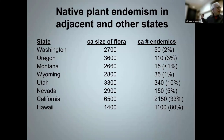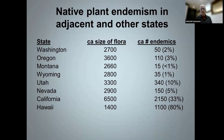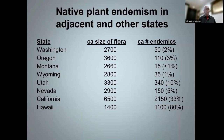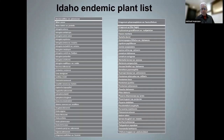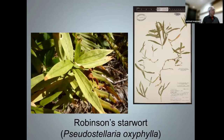We have 69 endemic plants in Idaho, and each one has a story to tell. Tonight we're going to look at a few of those stories. I've tried to include plants from around the state, including Northern Idaho. I've also emphasized some species that are relatively new — newly described species you may be less familiar with. We're going to start in North Idaho, work our way south, then head over to Eastern Idaho.